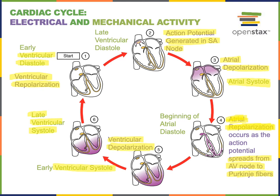Following ventricular ejection, during early ventricular diastole, the volume of blood inside the ventricles does not change. But then during late ventricular diastole, blood starts to flow from the atria down into the ventricles, increasing the volume of blood inside the ventricles.